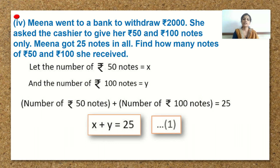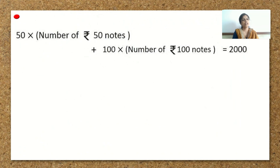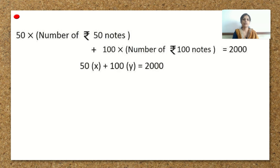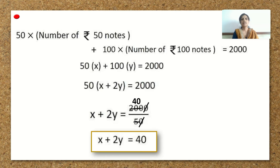The total amount withdrawn from the bank is Rs. 2000. So, 50 into x plus 100 into y is equal to 2000. Taking 50 common, we get x plus 2y is equal to 2000 divided by 50. Simplifying, 2000 divided by 50 is 40, so we get x plus 2y is equal to 40. This is our equation 2.